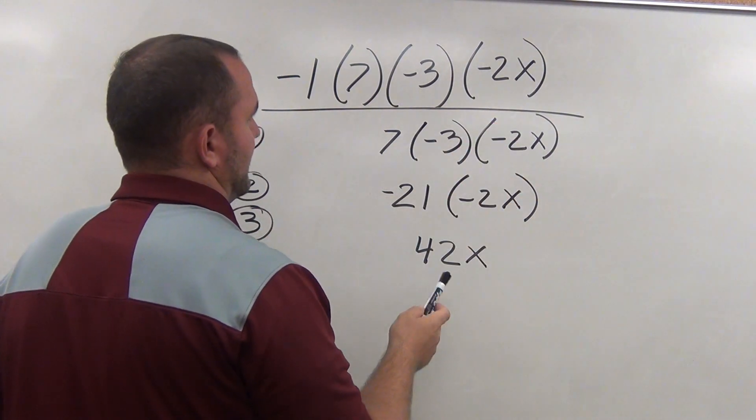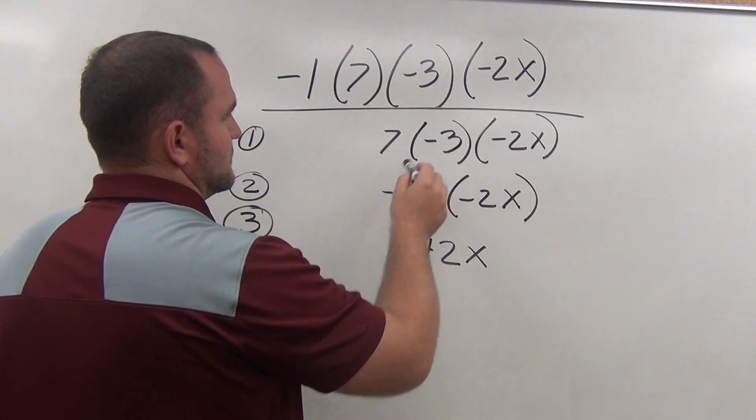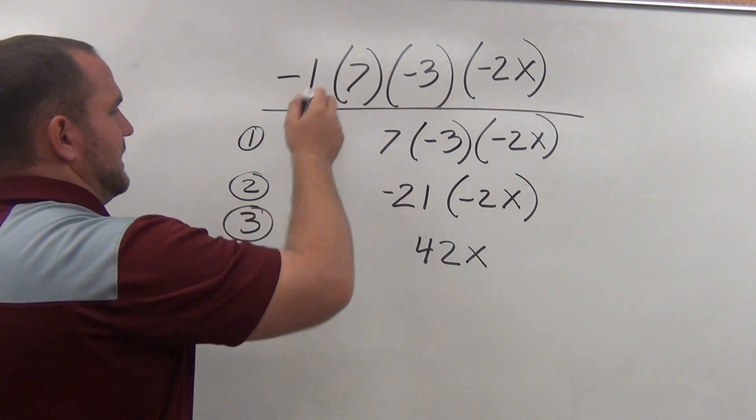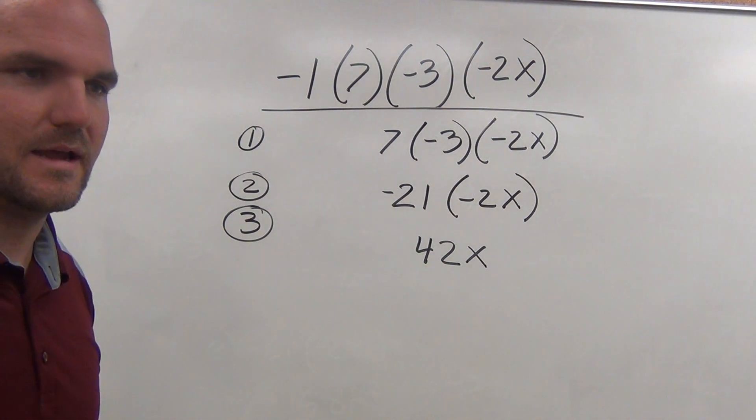So, let's look at it. Negative 2, they didn't do anything to that. Negative 3, drop that down. They didn't do anything to that. So, at this point we have a 7 and we have a negative 1 times 7.